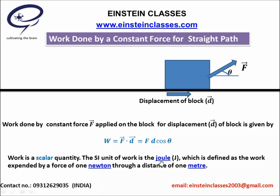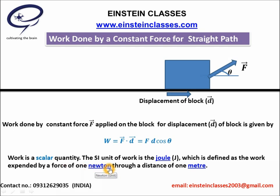The SI unit of work is Joule. Another unit is Newton meter. Hence, one Joule equals one Newton meter. One Joule is the work performed by a constant force of one Newton, due to which the block or system will travel a distance of one meter along the direction of force.